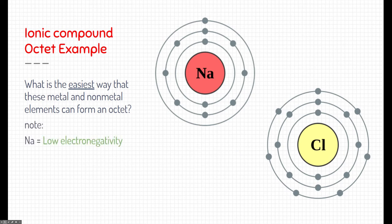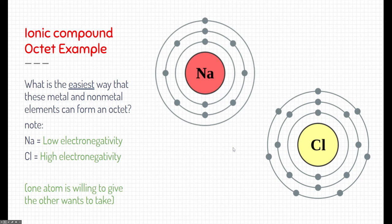Electronegativity is the tendency of an element to be attracted to electrons. So sodium isn't very attracted to electrons. Chlorine, on the other hand, has a high electronegativity. It really wants electrons. And so here, one atom is willing to give up its electrons. It's not attracted. And the other one really wants more electrons. So you can kind of figure out what's going to go on here.